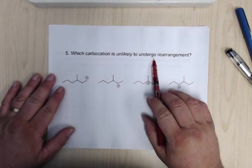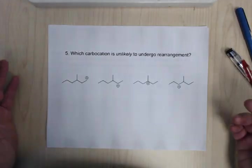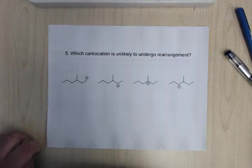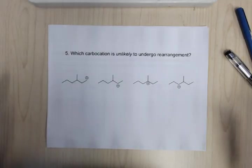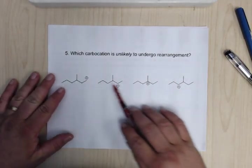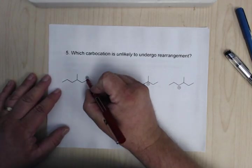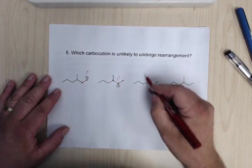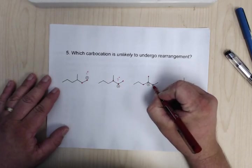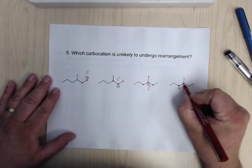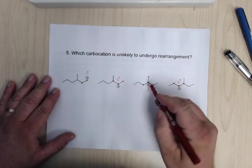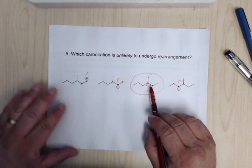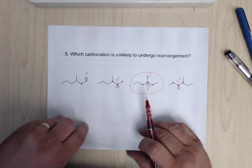Which carbocation is unlikely to undergo rearrangement? Remember why they go through rearrangements — it's to get to a higher order. If you have a primary carbocation, it's going to want to go to secondary or tertiary. If secondary, it's going to want to go up to tertiary. So you need to look at whether any of these are already secondary or tertiary. This one has one carbon attached — primary. This one has two carbons — secondary. This one has three carbons attached — so it's tertiary. There's no incentive for the tertiary carbocation to undergo rearrangement because it's already at the highest order, so that one is least likely to rearrange.